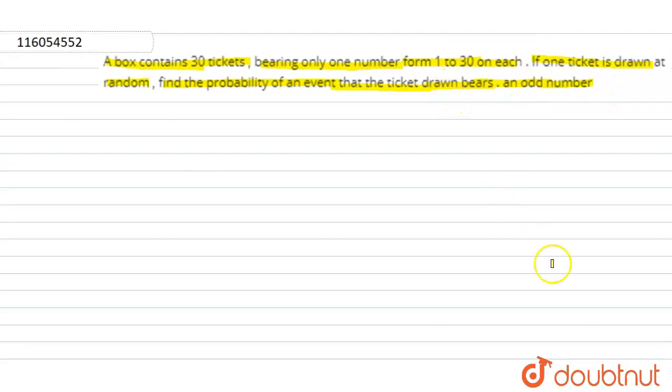Now, we have a box in which there are 30 tickets. Every ticket has one number. If there are 30 tickets, then 1 to 30 numbers are written. It means that every ticket has one number. A ticket is drawn randomly. We will find the probability that the drawn ticket bears an odd number. So, first of all, we will see the sample space.